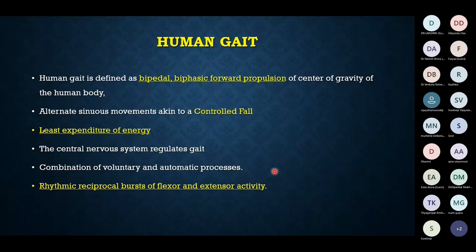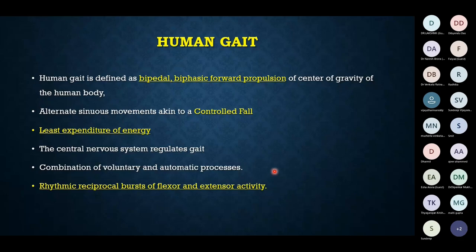Gait is a bipedal, biphasic forward propulsion of the center of gravity of the body — essentially a controlled fall. One foot pushes the body forward to cause a fall while the next foot steps forward to support it. This keeps going in a reciprocal manner, controlled by both the central nervous system and spinal reflexes, occurring with the least expenditure of energy.